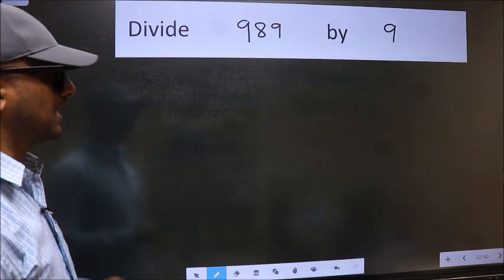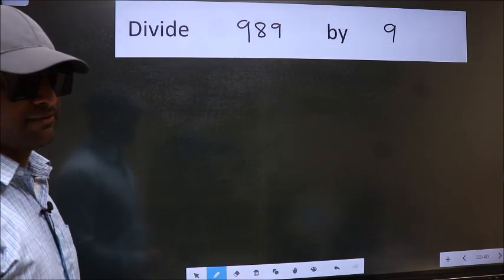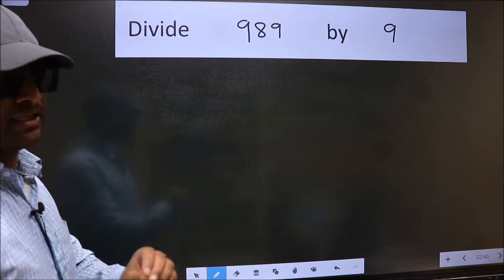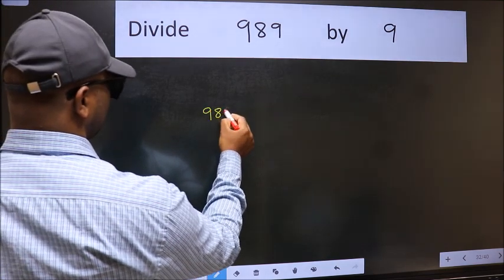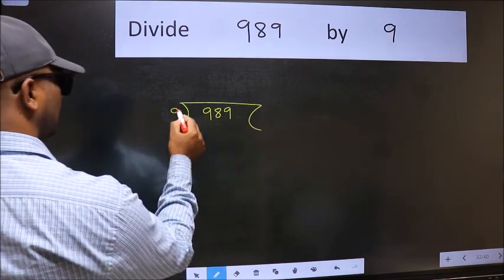Divide 989 by 9. To do this division, we should frame it in this way. 989 here and 9 here.